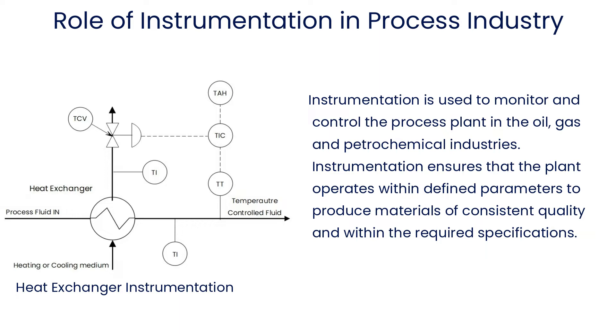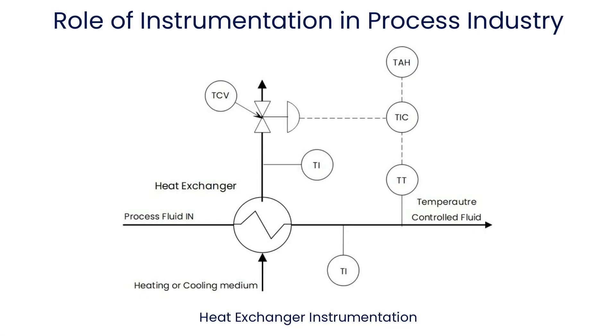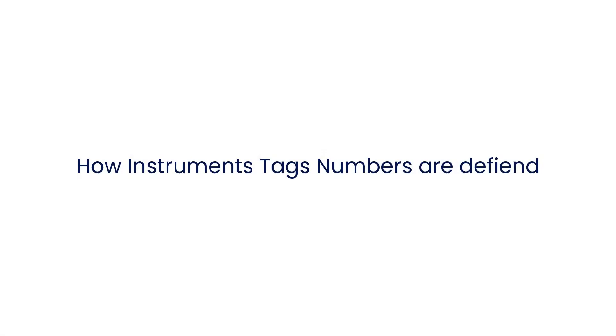Instrumentation ensures that the plant operates within defined parameters to produce required products. In this P&ID diagram, there are some symbols that indicate instrumentation. Let's understand identification of these instrumentation symbols.